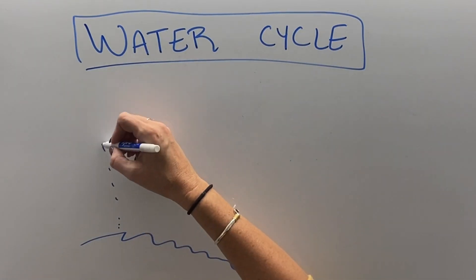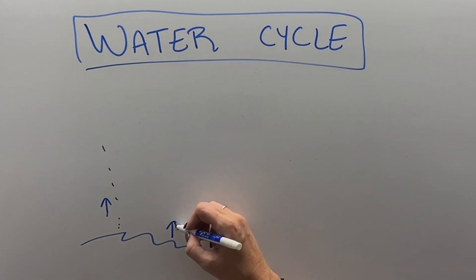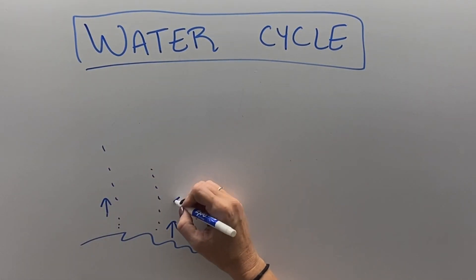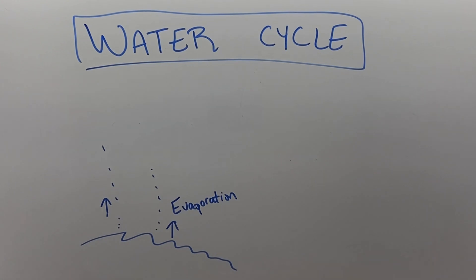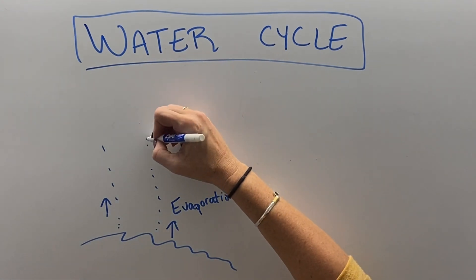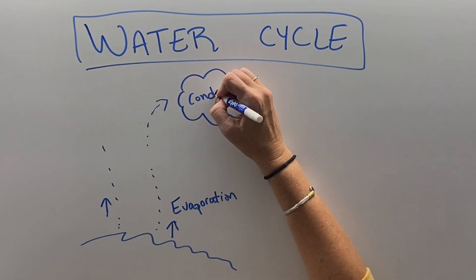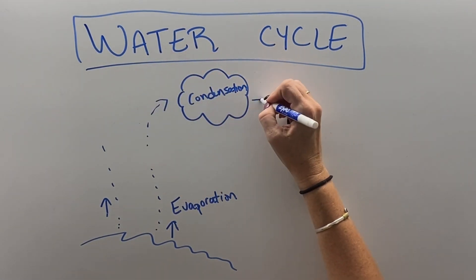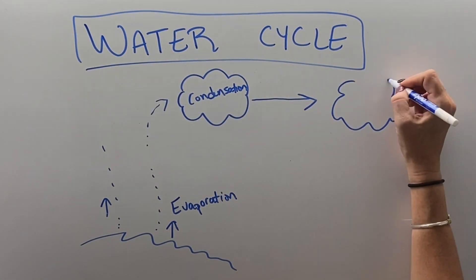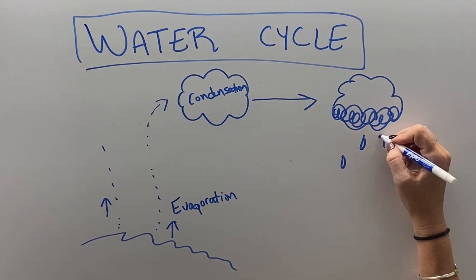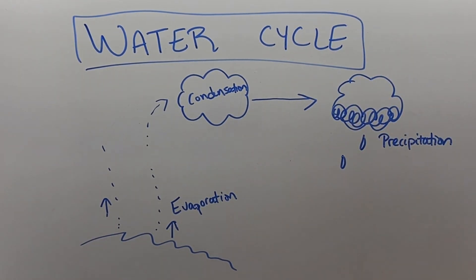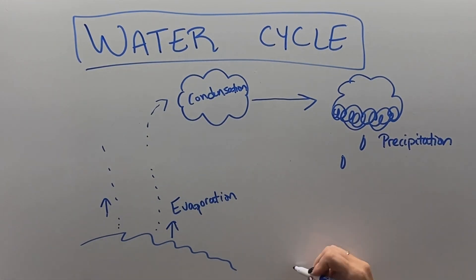To understand how our water system works, we need to understand the water cycle. Water evaporates from groundwater sources, oceans, lakes, rivers, and streams, and condenses up into the clouds, which eventually get cooler and heavier until they form water droplets and precipitation.